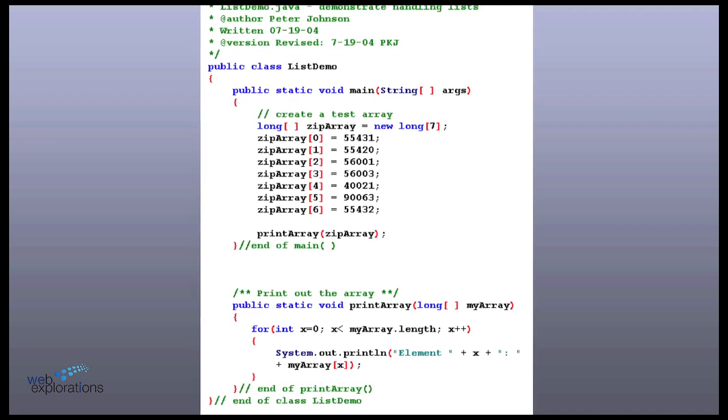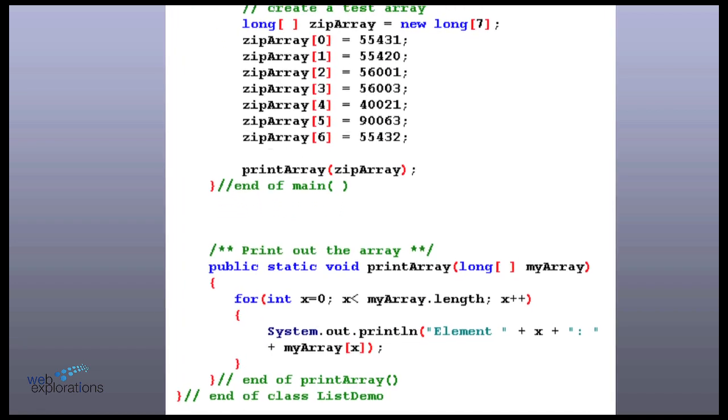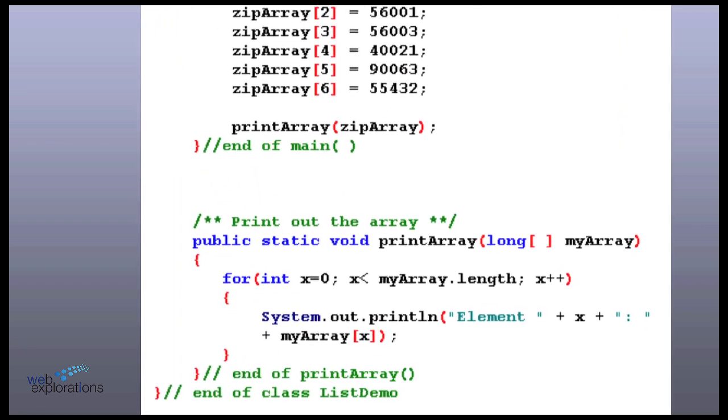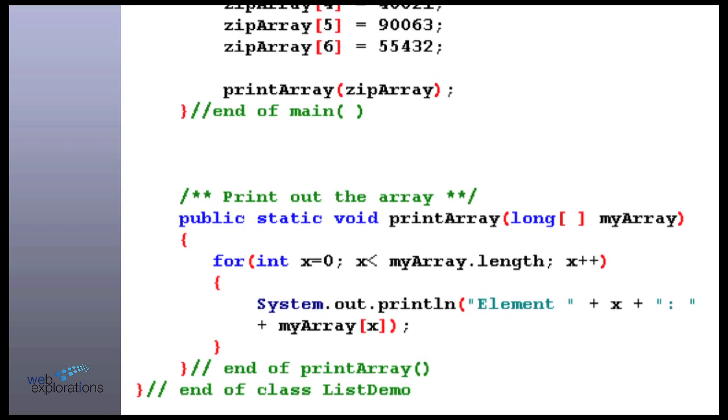And then I called my little print array routine that we figured out a couple weeks ago. And you can see in here, did I pass in? What is inside a zip array? What did I pass in? Memory location. Yep. Excellent. Excellent. A memory location pointing to this array.